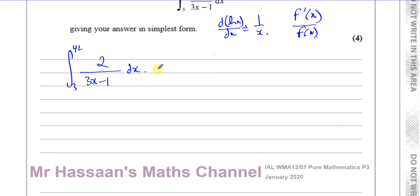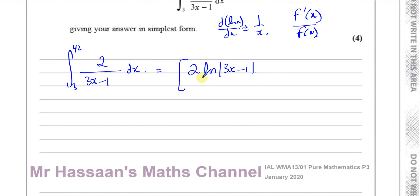So when I integrate this, I'm going to get 2 times the ln of the modulus of the denominator, 3x minus 1. But I need to divide by the differential of what's inside the function — that's what you do with the reverse of the chain rule, always divide by the differential of what's inside. So I divide by the differential of 3x minus 1, which is 3.